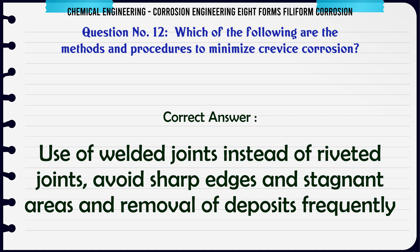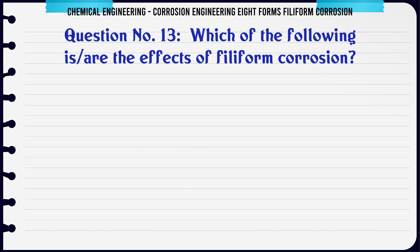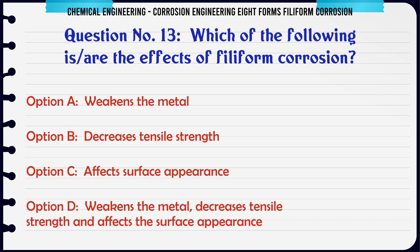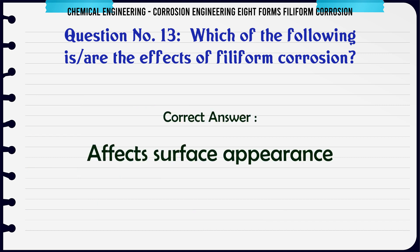Which of the following are the effects of filiform corrosion? a. Weakens the metal. b. Decreases tensile strength. c. Affects surface appearance. d. Weakens the metal, decreases tensile strength, and affects the surface appearance. The correct answer is c: affects surface appearance.